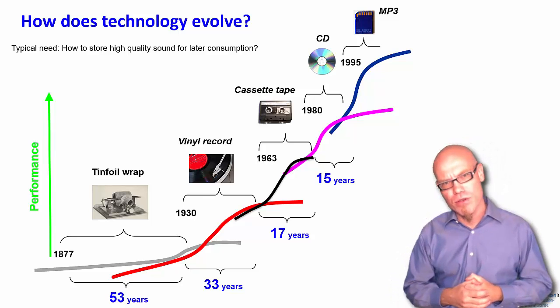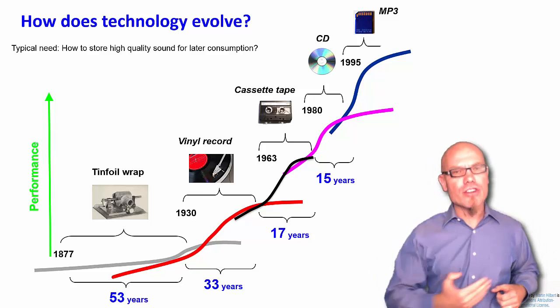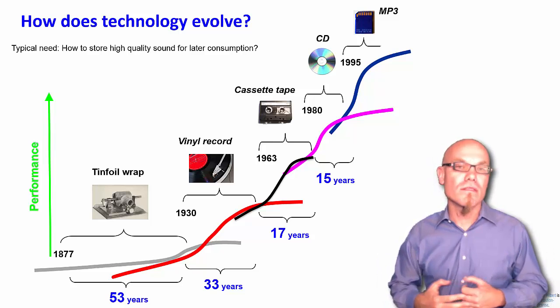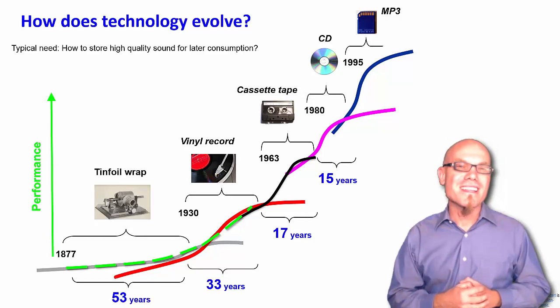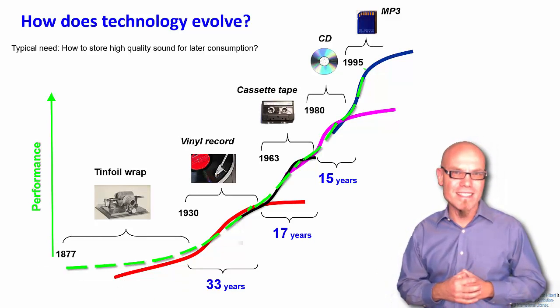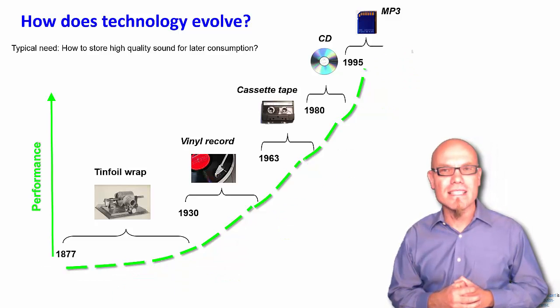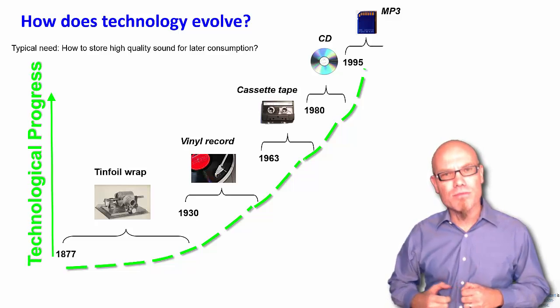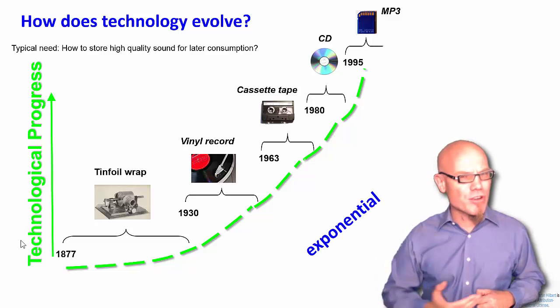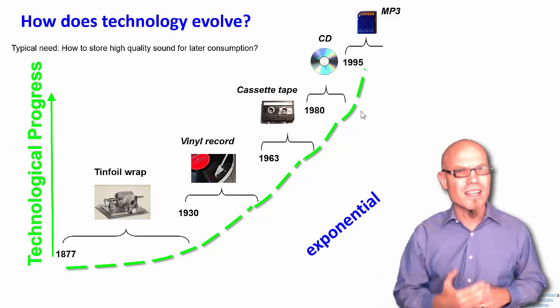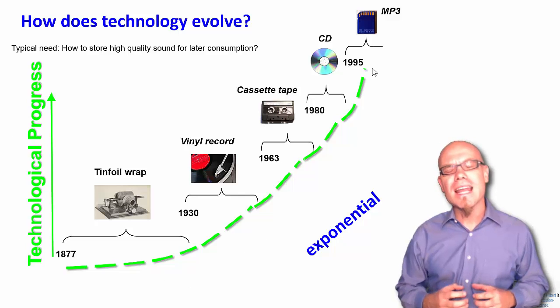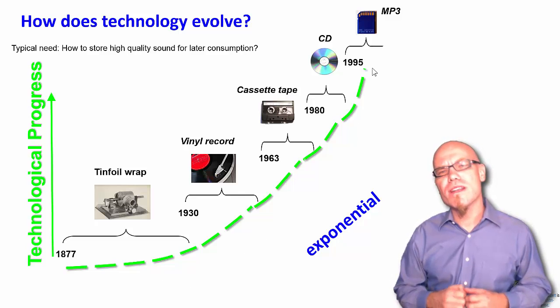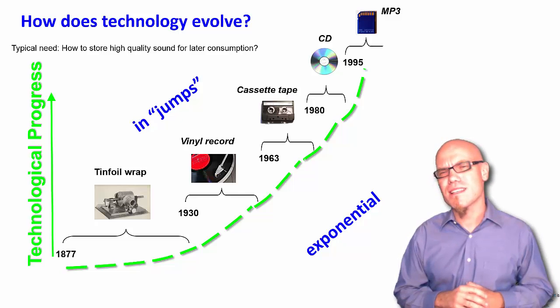That's the first very important insight. If we now take the average curve along this trajectory, we have actually the curve of technological progress, and it is characterized by two characteristics. One, the progression seems to increase, so there is an exponential logic to it. We will talk more about this later. And this evolution seems to go in discrete jumps. So two very important insights about how technology evolves.